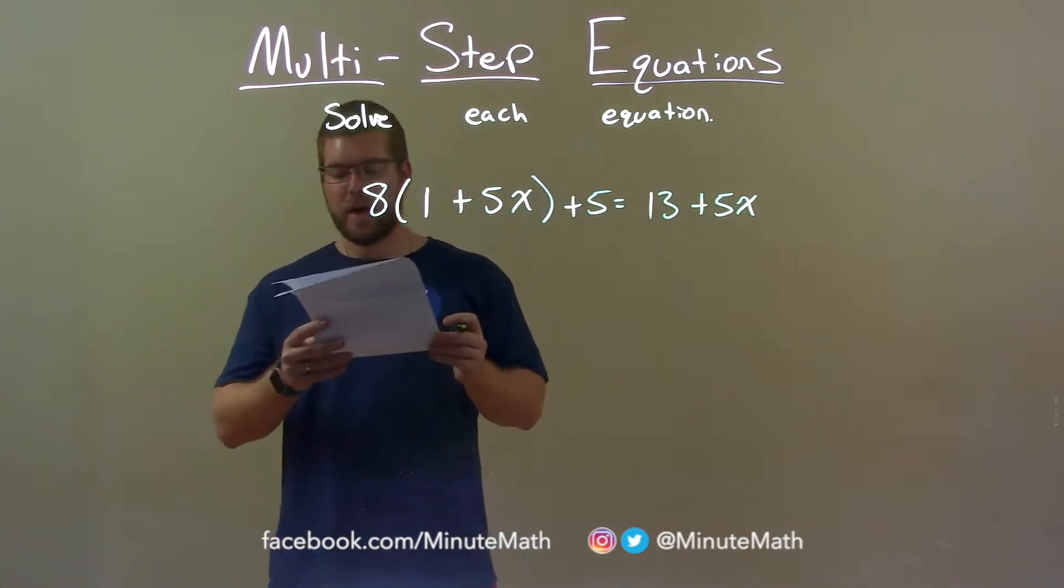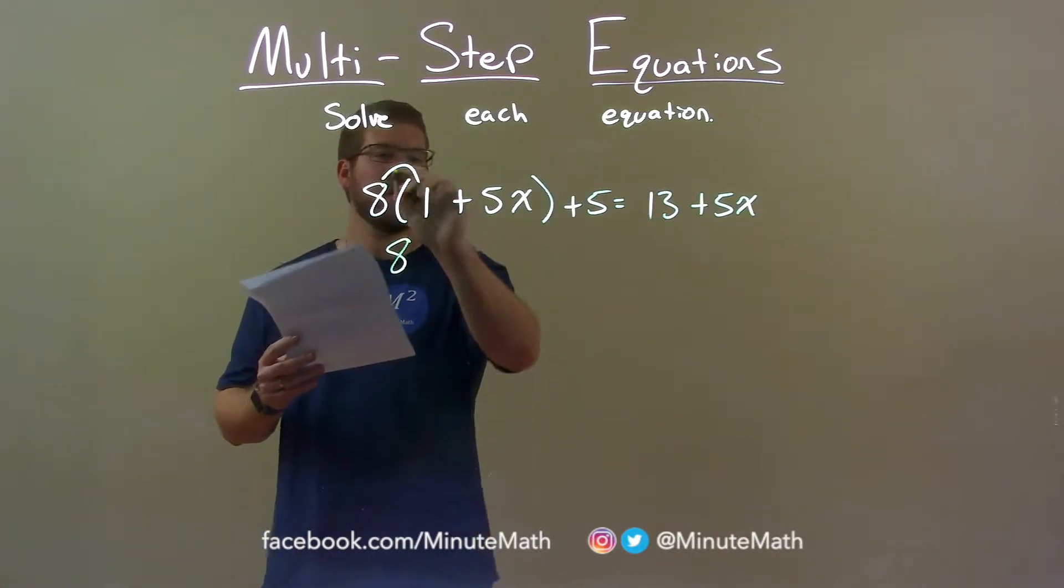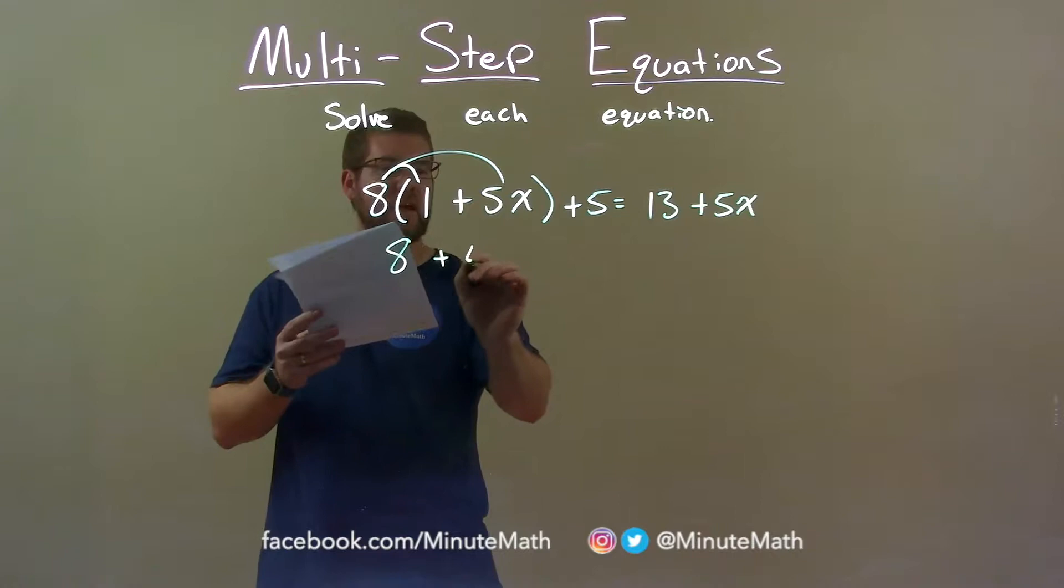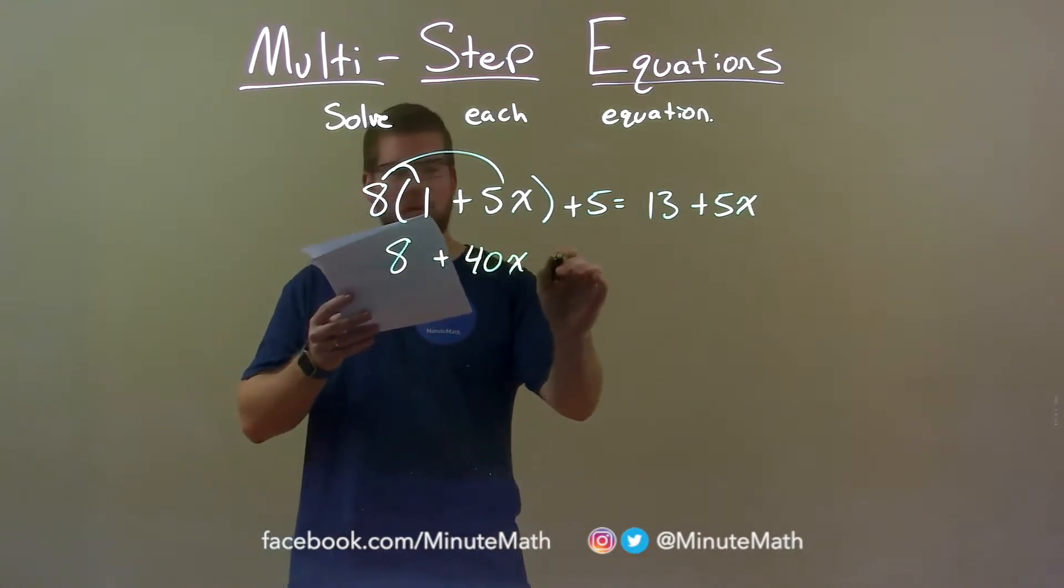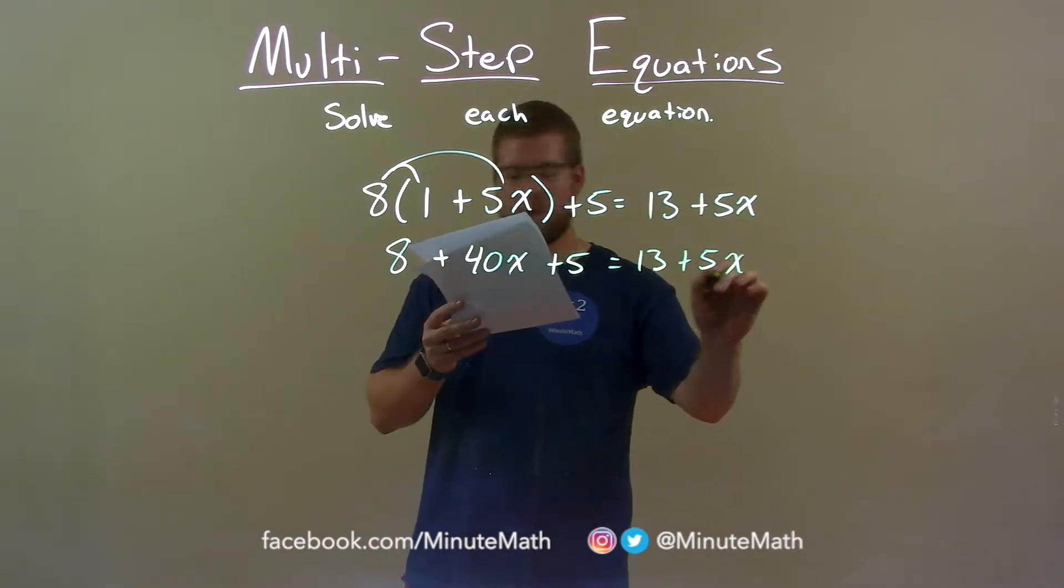First step in doing so, I distribute the 8 into the parentheses. 8 times 1 is 8 and 8 times 5x is 40x and we bring down the plus 5 and the 13 plus 5x.